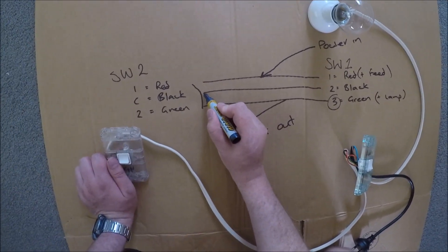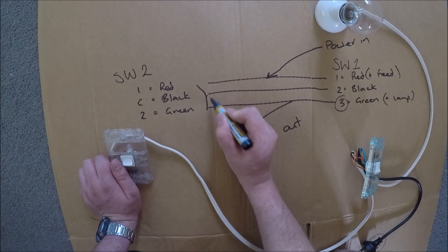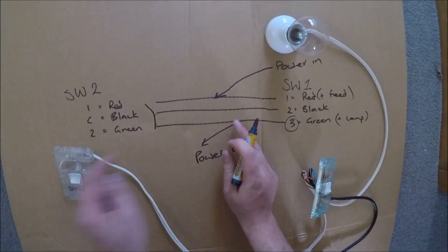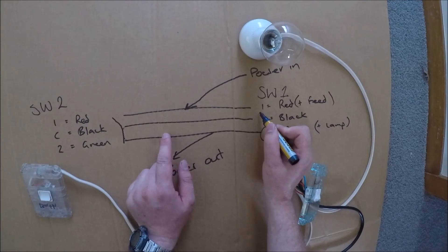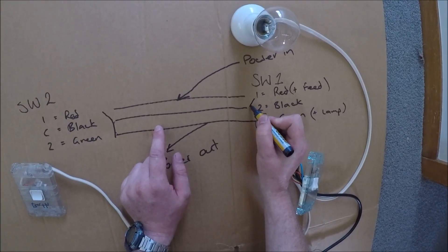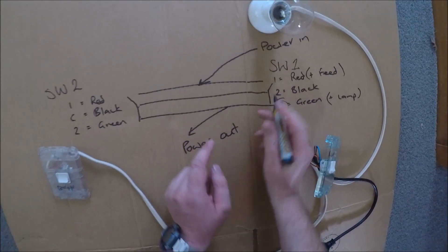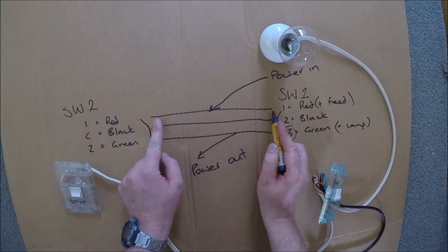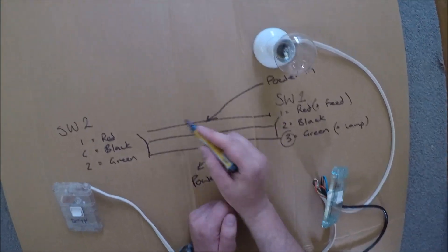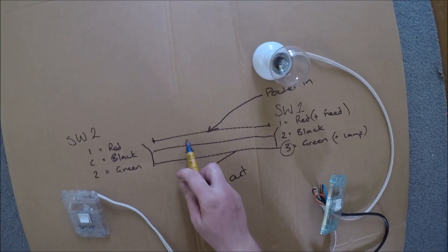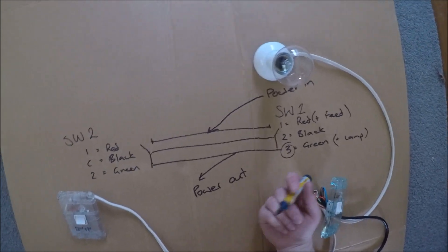So in a sense, these two are connected together with this switch. And then if we have this one in the same position, then this cable here is not connected to anything. So this one's live, but the lights won't work.